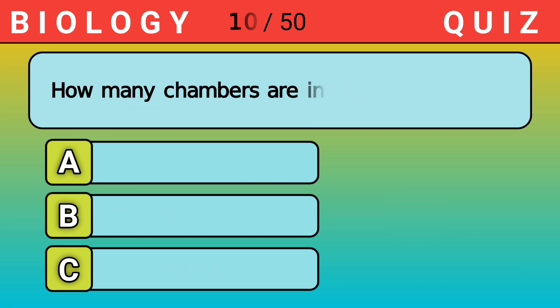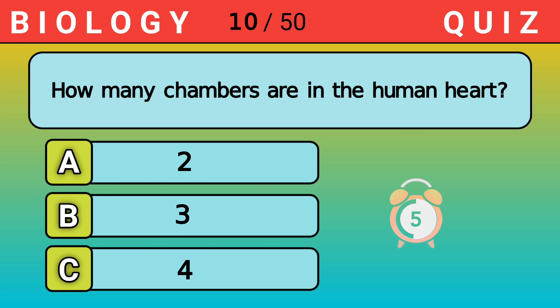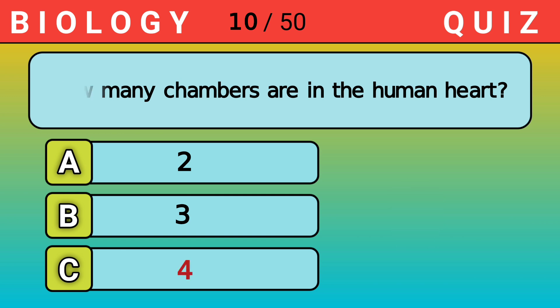How many chambers are in the human heart? Answer C. 4.